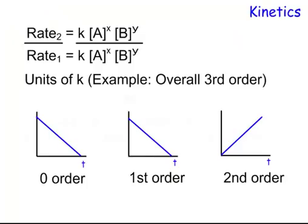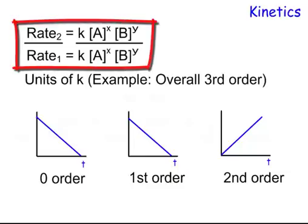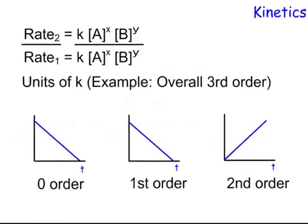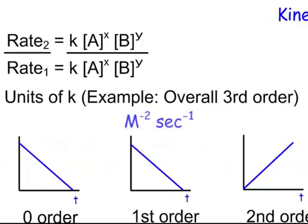Let's go into the second part of kinetics, which is whenever you're doing, whenever you've been given initial rates of reactions, write it like this. Rate 2 over rate 1 equals K, A to the X, B to the Y, and plug in your data to justify your answer. Once you find out what K is, remember your units for K. If you're overall third order, how many molars do we got to get rid of? Molars to the negative 2. We always got to get rid of a second, second to negative 1.